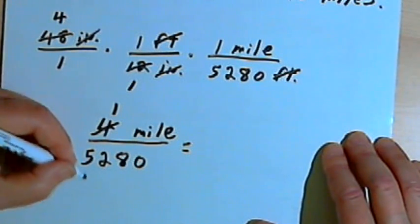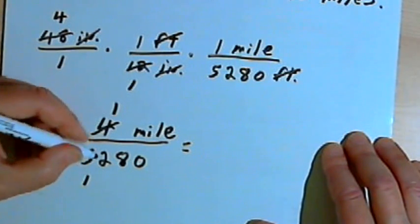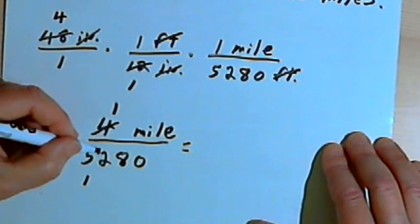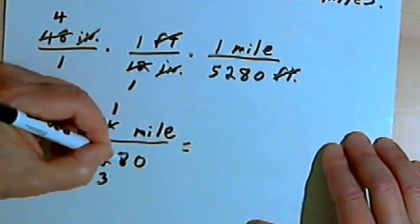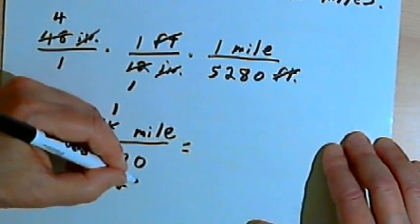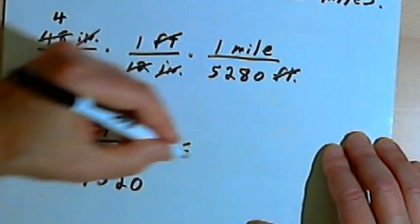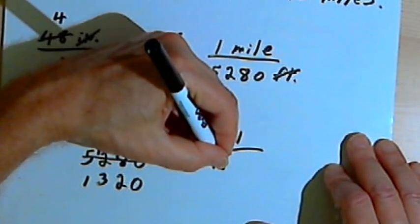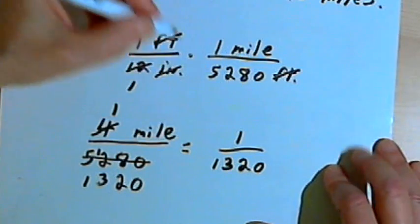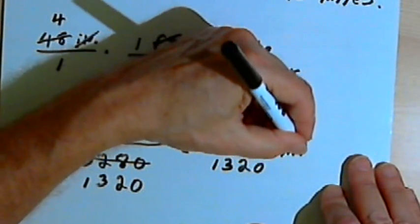4 is going to go into the 5 one time with a 1 remainder. It'll go into 12 three times. There'll be 0 remainder. It'll go into 8 two times and 0 zero times. So I'm going to have 1 over 1,320. I'll have that fraction of a mile.